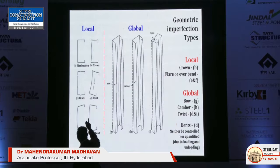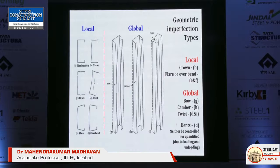I learned something new today — I cannot use my pointer on an LED screen. On the left side you have the ideal section, then crown, then dent, then twist, flare, and overband. These are the different types of imperfections.